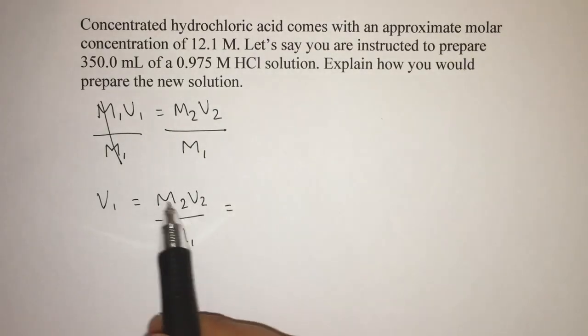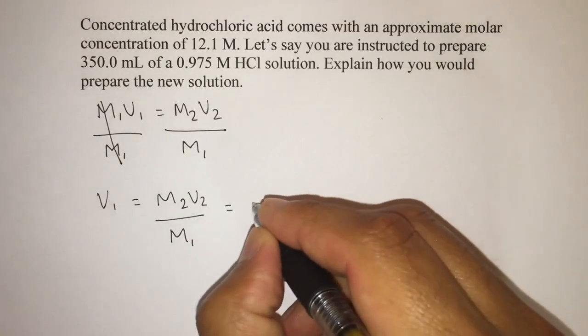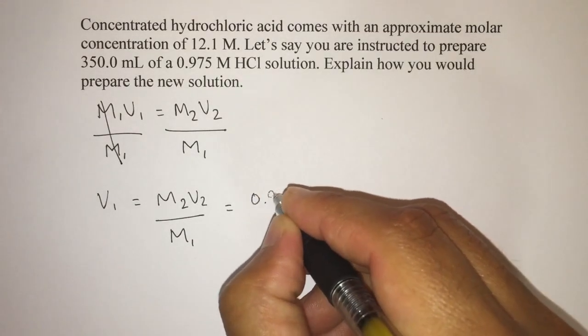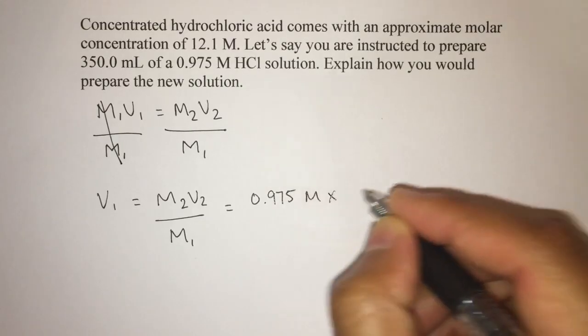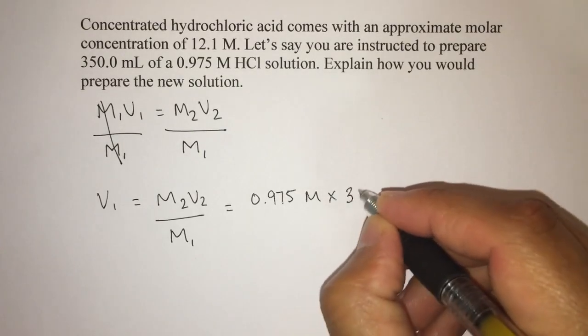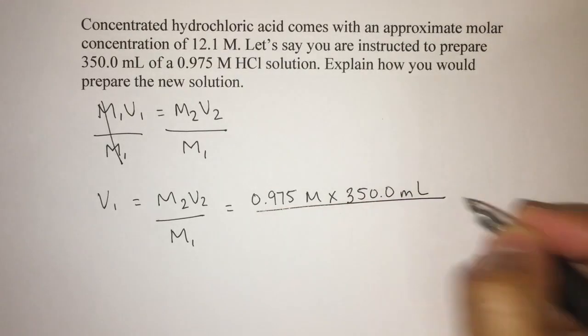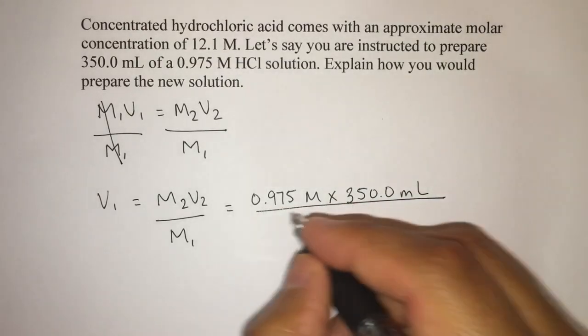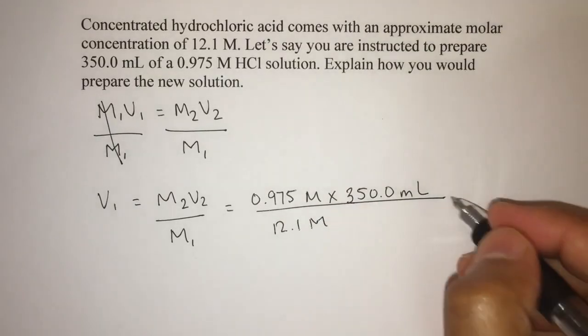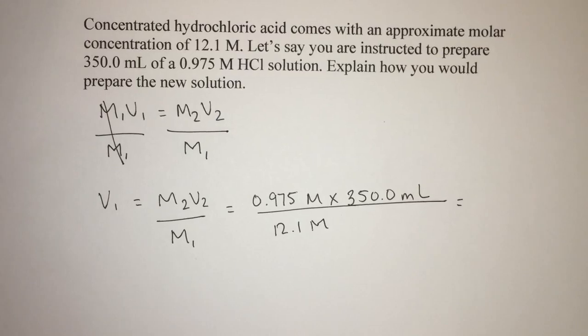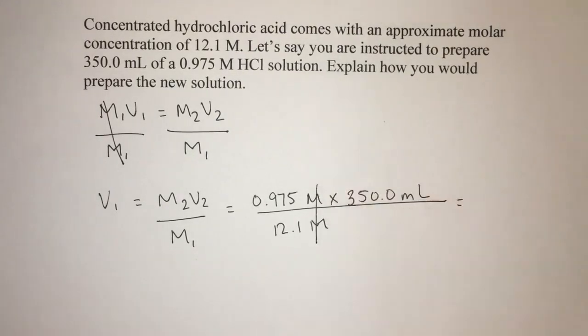So let's plug this in. M2 times V2 divided by M1. Okay, so right here you'll notice molar over molar. So those units will cancel.